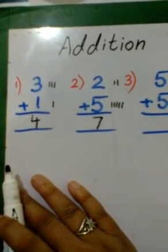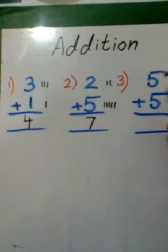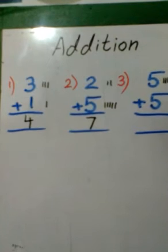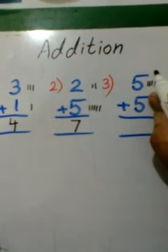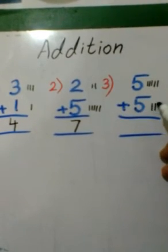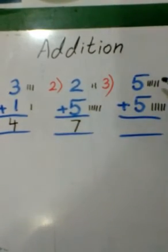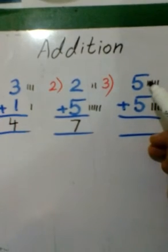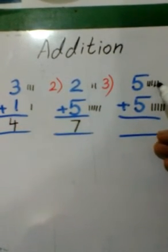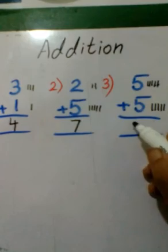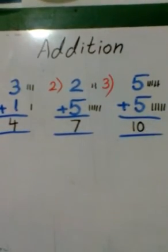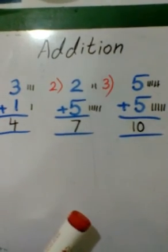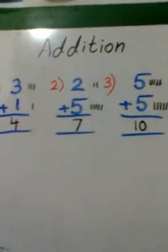5 plus 5. We have 5 lines: 1, 2, 3, 4, 5. And with another 5 we have 5 more lines: 1, 2, 3, 4, 5. Counting all together: 1, 2, 3, 4, 5, 6, 7, 8, 9, 10. So 5 plus 5 is equal to 10.